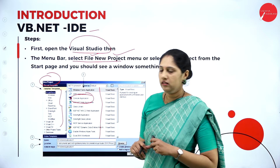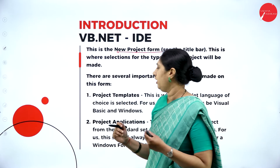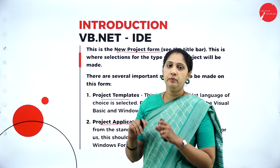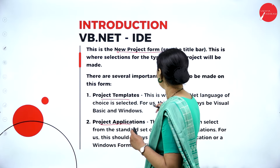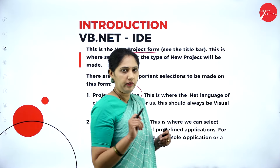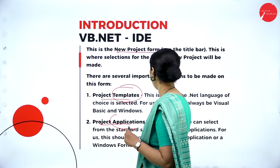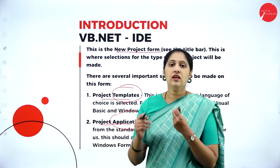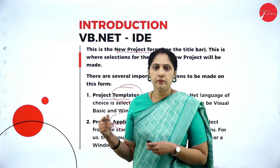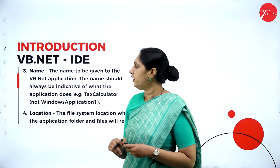If you want to install VB.NET, do a Google search and download Visual Studio. Once installed, the steps to create an application are: open Visual Studio, the menu bar will appear, and then we create a new project by selecting File > New Project.